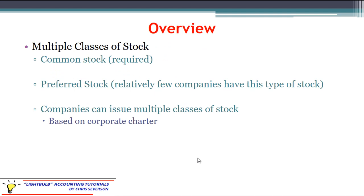Now when you talk about these corporations, you could see multiple classes of stock. If it's actually a corporation, you have to have common stock — that's your base level of stock, and it's required. But then you have a potential for another class of stock called preferred stock. Relatively few companies have this type of stock. Even within common stock and preferred stock, companies can have multiple classes of these types of stock. It's all based on the corporate charter — what they set up, what they want to issue, different levels of ownership.